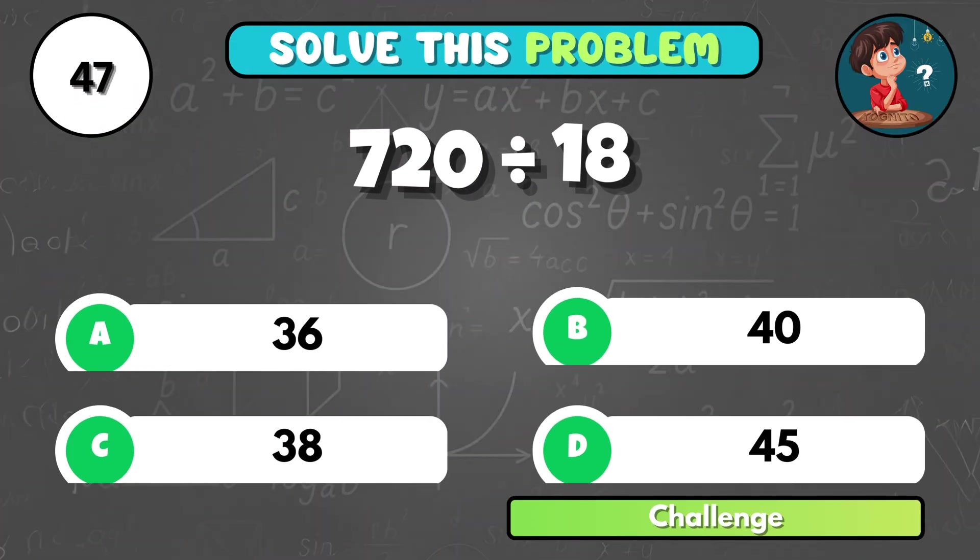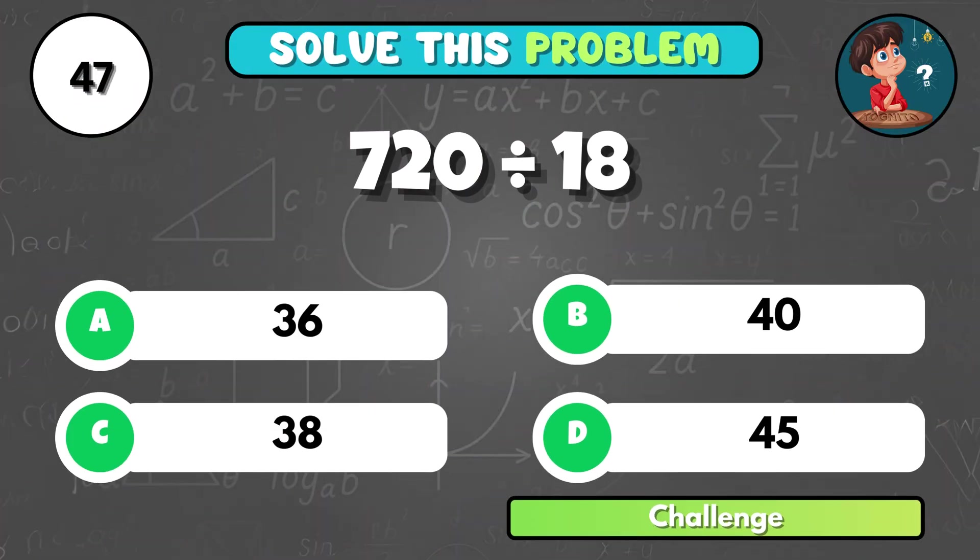How many times does 18 go into 720? It's B, 40.